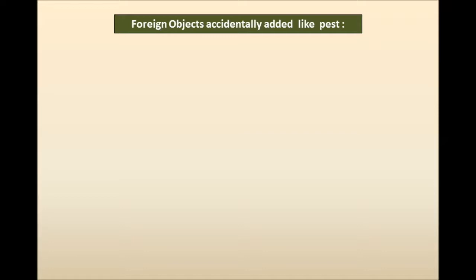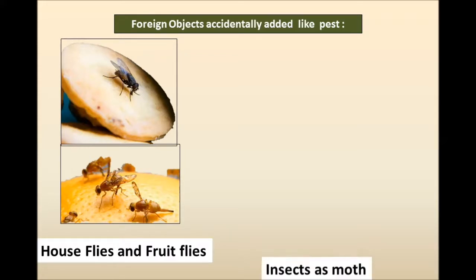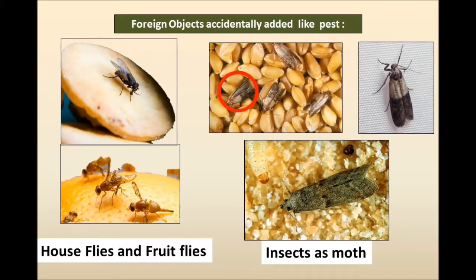There are also other objects that may be accidentally introduced — pests are very critical to any food industry. Pests include house flies and fruit flies, which even occur in our homes. Any kind of mosquitoes or flying insects can carry microorganisms from an unclean surface to a clean food surface. Pests therefore form two categories of hazard: physical hazard and biological hazard.